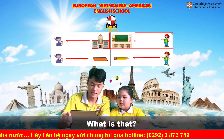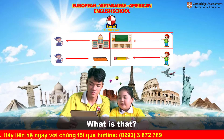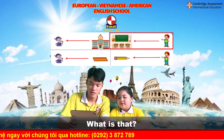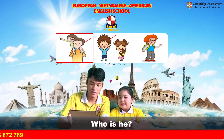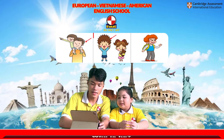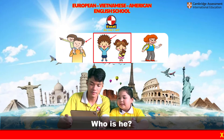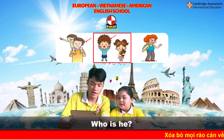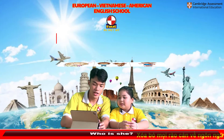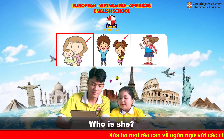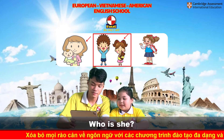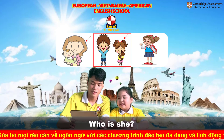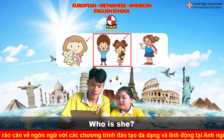What is that? That is your classroom. All right. Who is he? He is my dad. Who is he? He is my father. Very good. Who is she? She is my mom. And who is she? She is my sister. Very good.